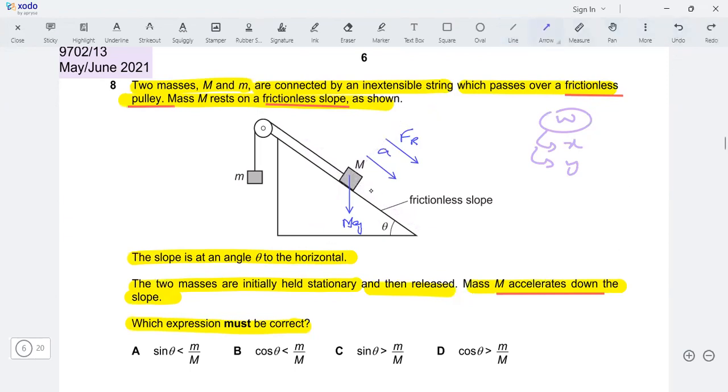So the two components must be something like this. These are the two components of the weight force. Now let's name these two components according to the angle. This is the angle.